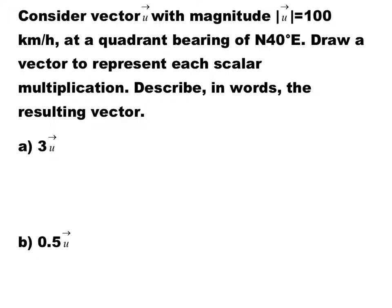In the next example, we have a vector U which has a magnitude of 100 kilometers per hour. So let's draw vector U. We know that the direction is north 40 degrees east. So this is going to be 40 degrees, and it's 100 kilometers per hour.